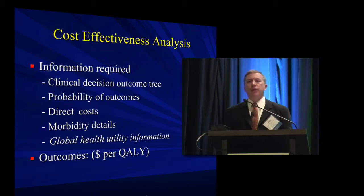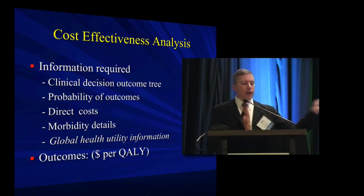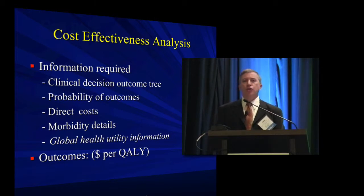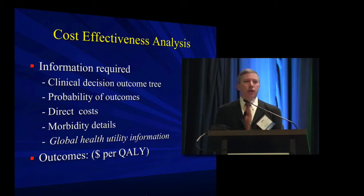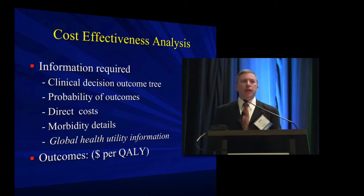Let's take it a step further. Let's use the exact same example, but talk about it in the context of whether we should be trying to flip babies at all. Now we're adding in some global health utility information — what is the quality of life of an individual in each of these different pathways on that decision tree? The outcomes here are not just 'do you save money' — there's a range of money you save.